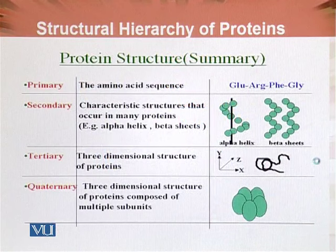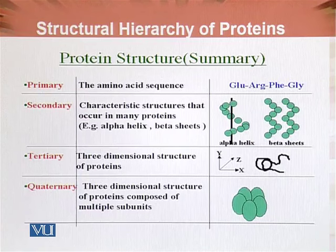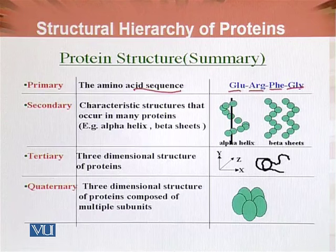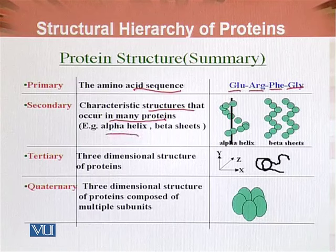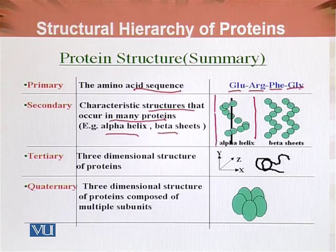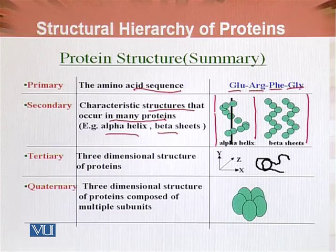So, the primary structure — as we have seen — is the amino acid sequence; for example, glutamine, arginine, phenylalanine, and glycine. This is an example of primary structure. In secondary structure, the characteristic structures that occur in many proteins — like alpha helix and beta sheets — arise from the configuration that the primary structure creates in space.